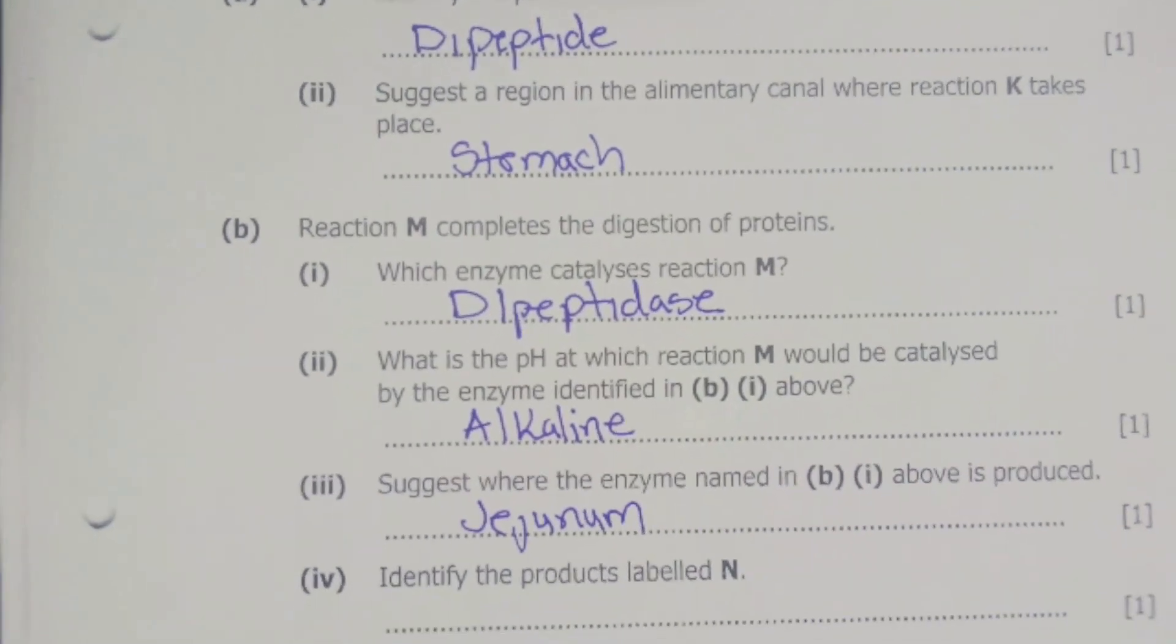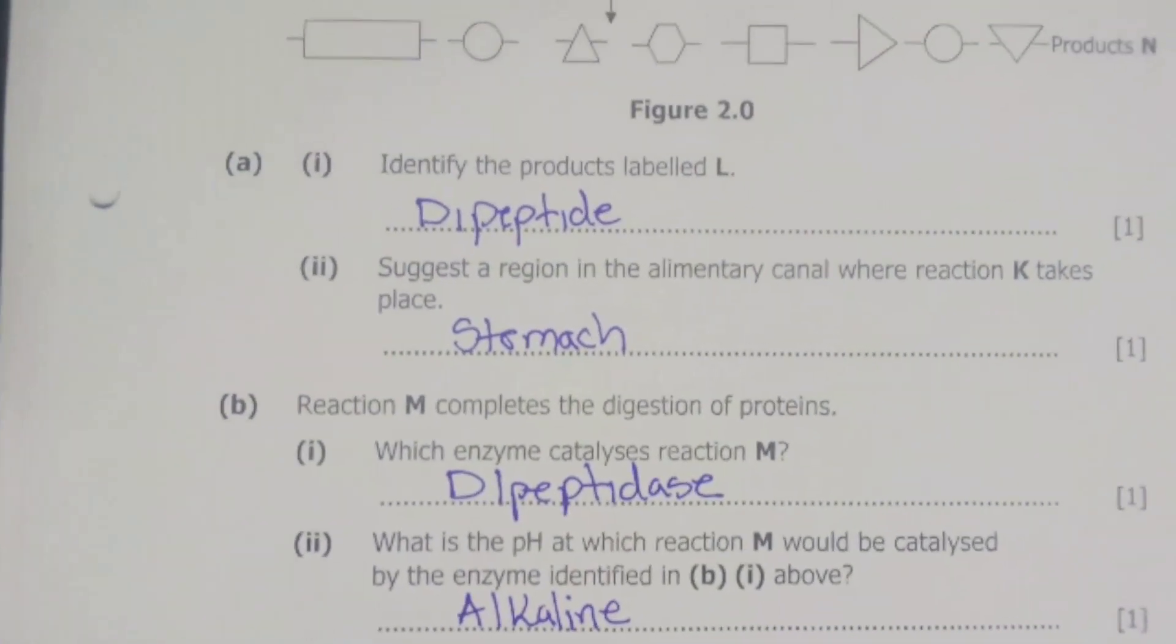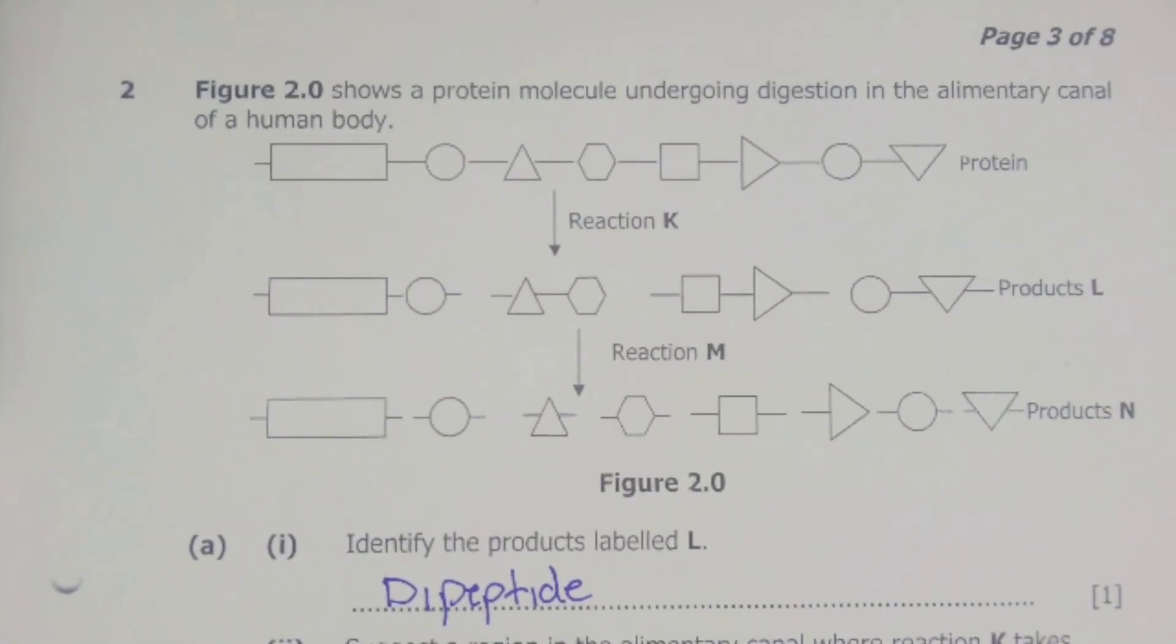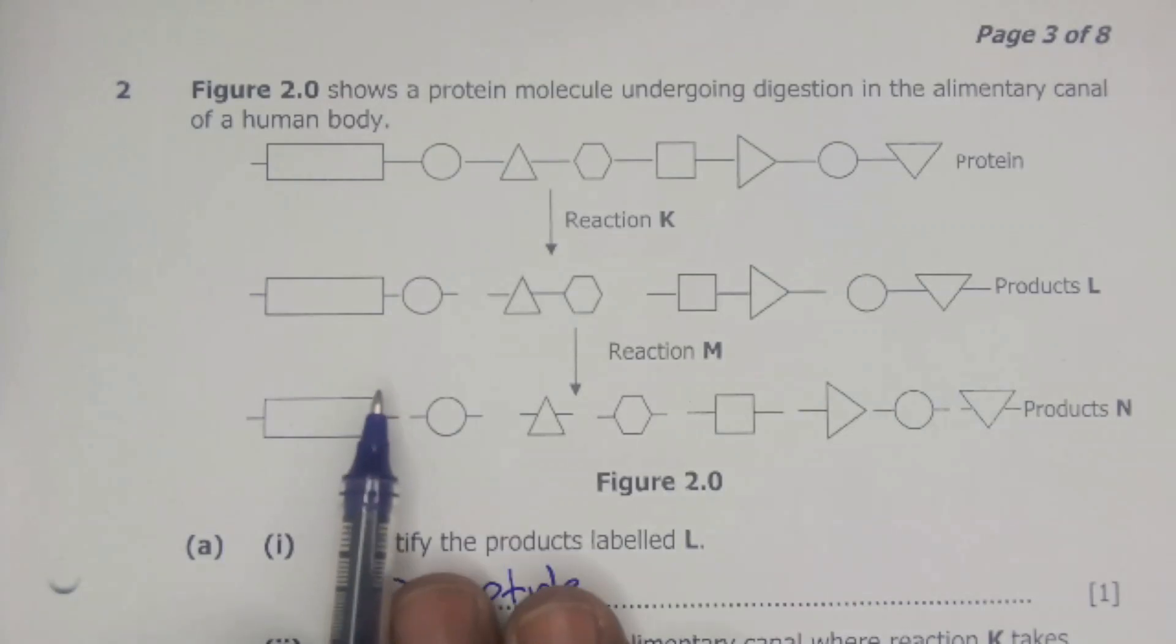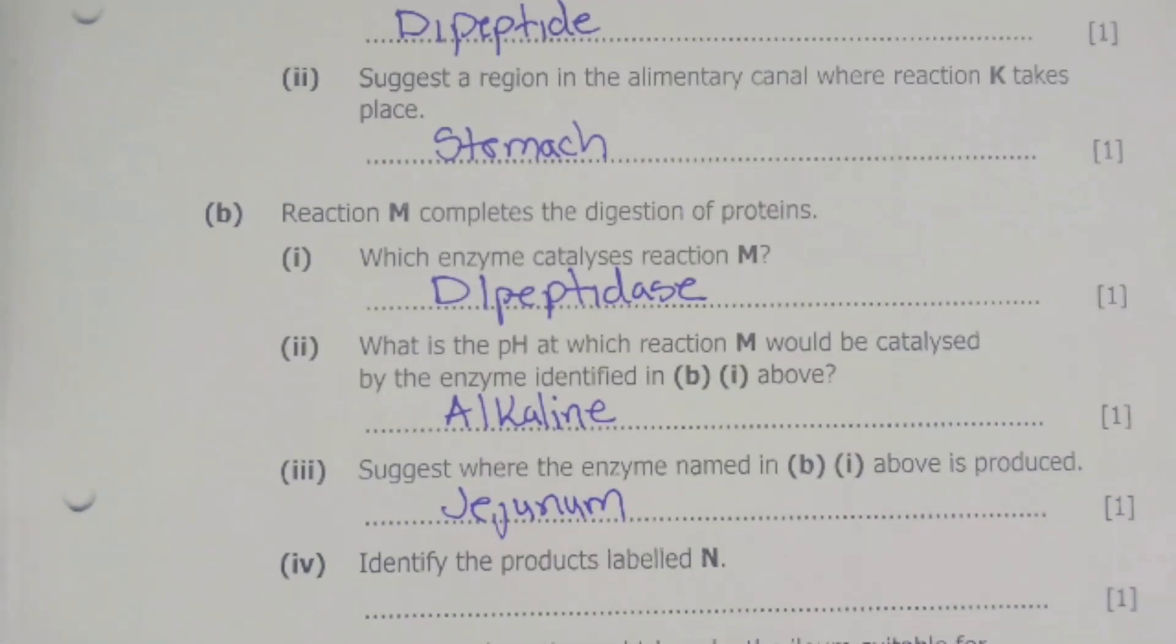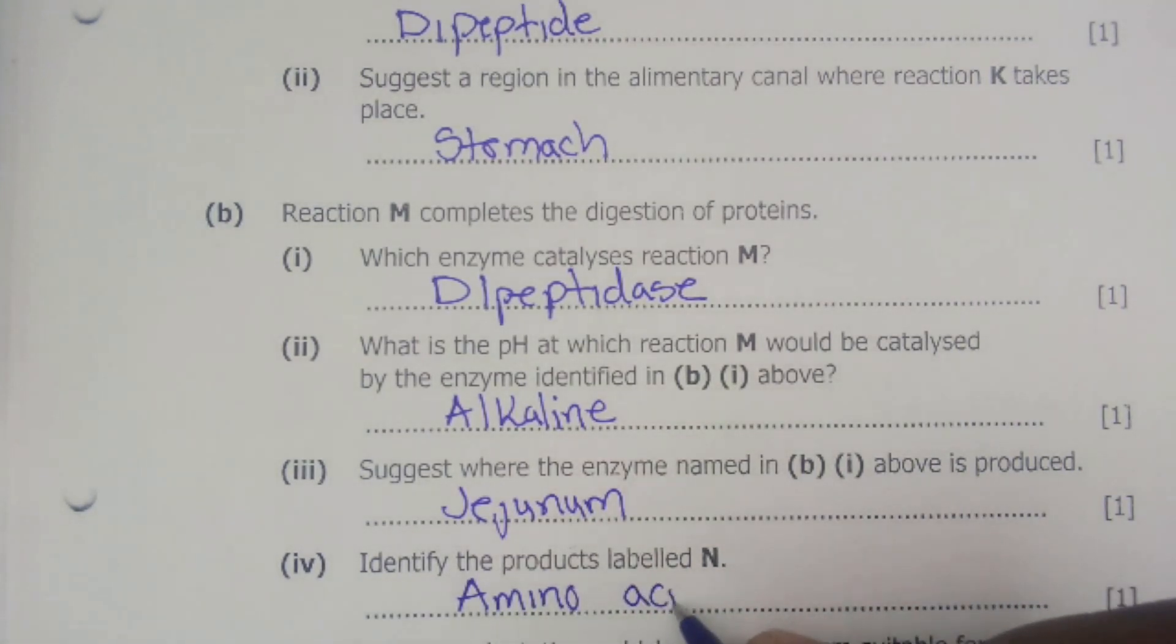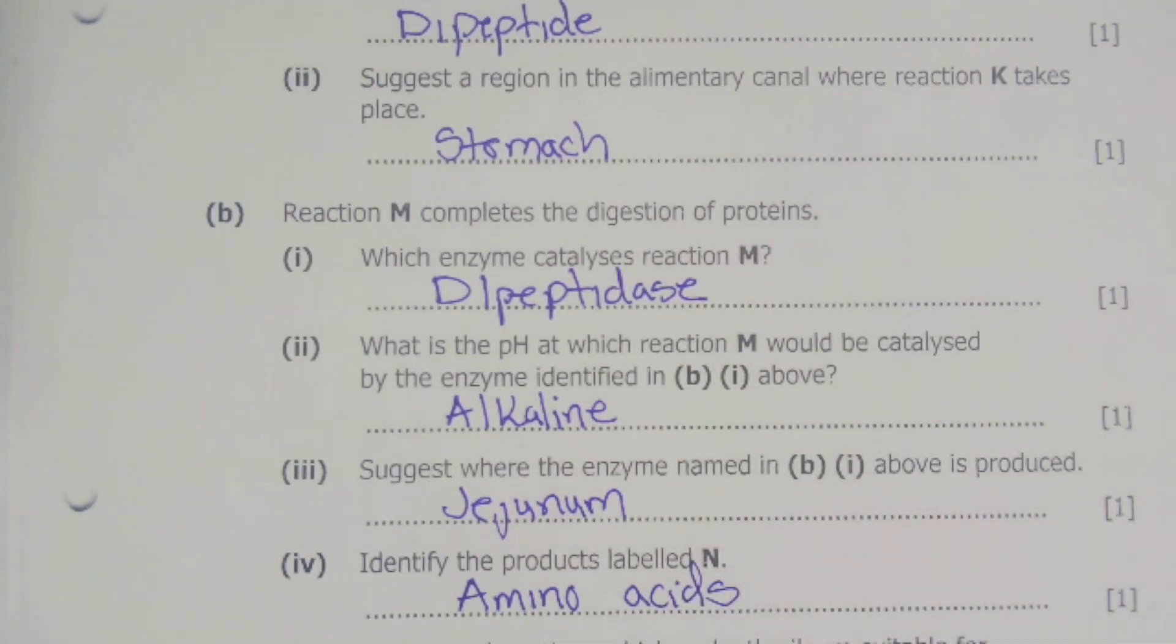The next question is B4. B4 says identify the products labeled N. If we go back to our diagram here, we had our protein being digested into dipeptides, then later on into product N's, which are amino acids. The building block for a protein is simply amino acids. So the end product after protein digestion is done are simply amino acids.